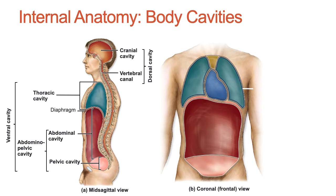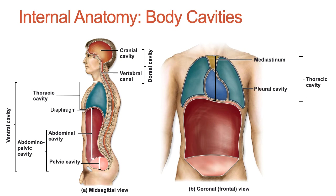The thoracic cavity is more superior and is enclosed by the rib cage. It contains the lungs and the heart, which is located within the mediastinum — more specifically within the pericardial cavity — and the lungs are located within the pleural cavity. The diaphragm forms the floor of the thoracic cavity and separates it from the abdominopelvic cavity.